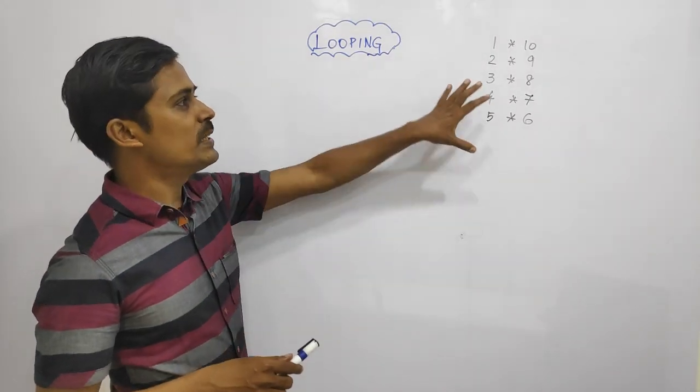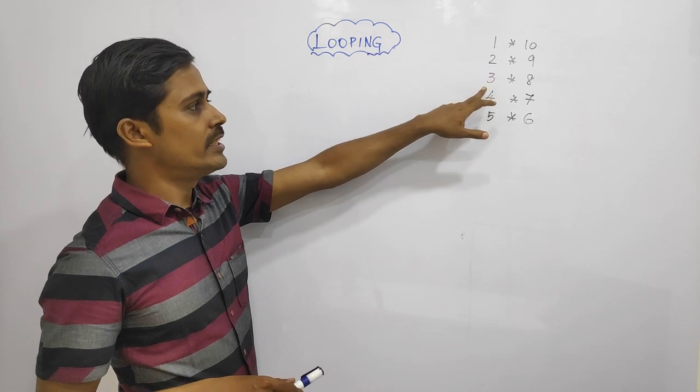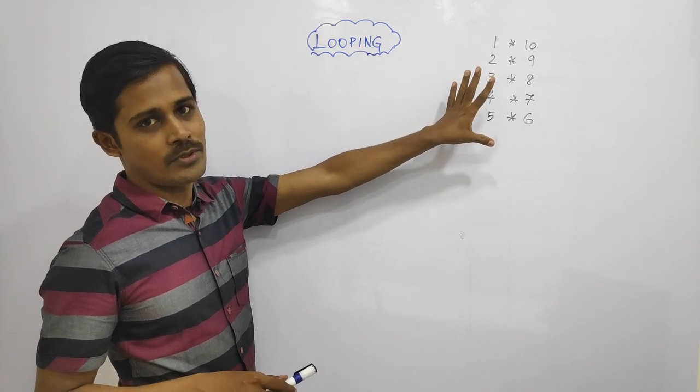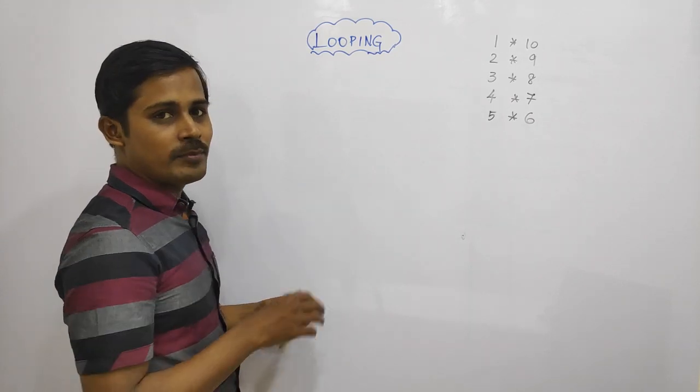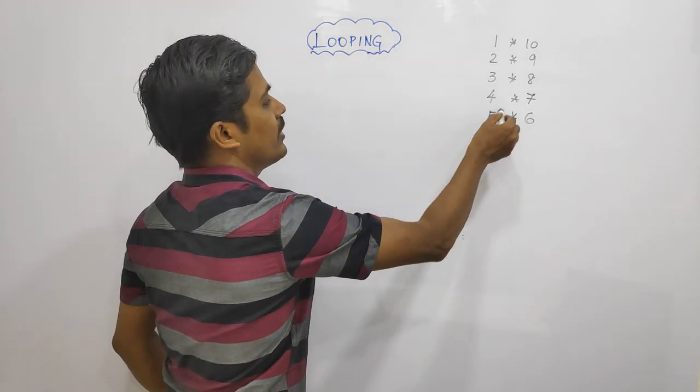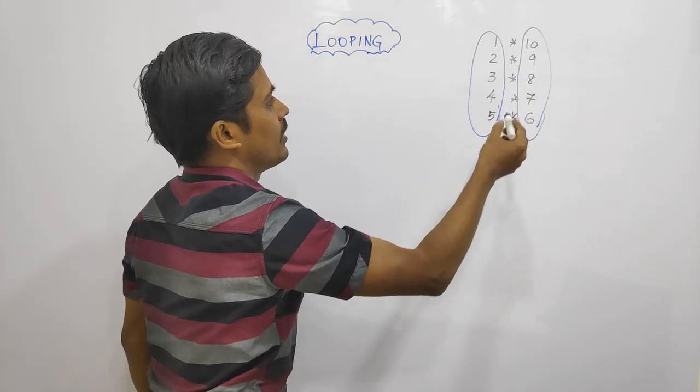In the looping series, we have a program that outputs 1, 10, 2, 9, 3, 8, 4, 5, 6. How do you get the output of this program? What do we know about this program? Do we know how to print this? Let's try it.